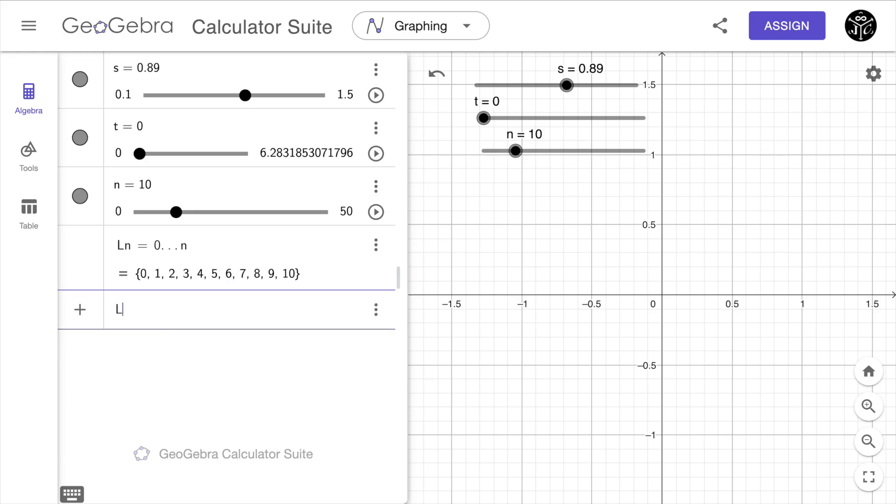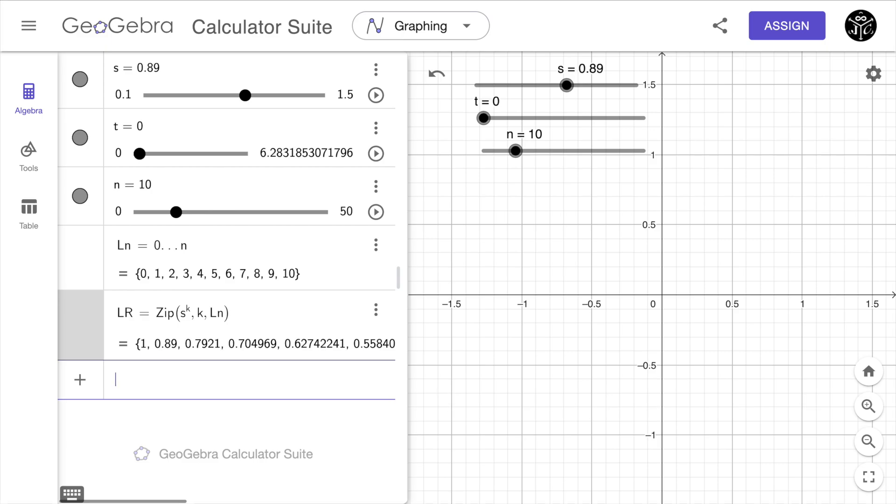Next I define the list lr equal to the zip command. This is going to create a sequence. In this case it's going to be the sequence of radii. S to the power of k where k is the variable and the variable belongs to the list ln.